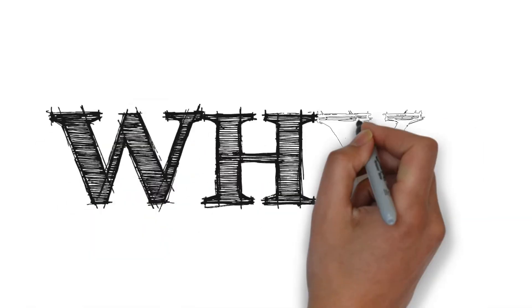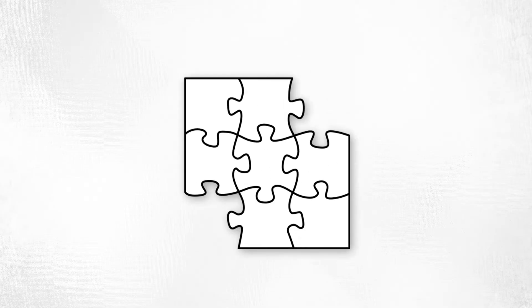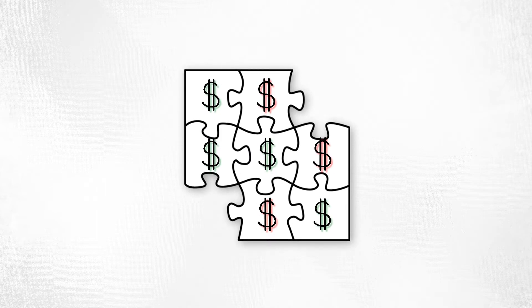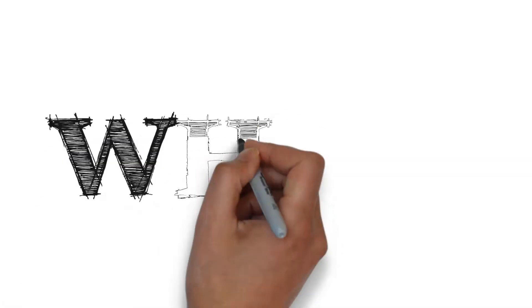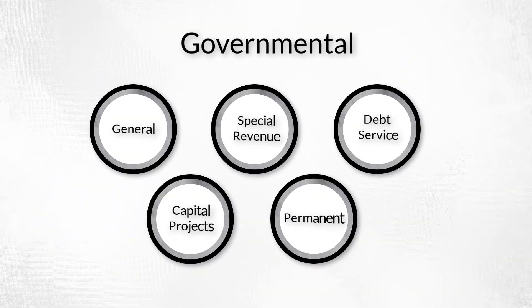Why do governments use different fund types? Because funds help appropriately account for many types of revenues and expenditures. So what are the different fund types? First is governmental, which includes five different categories.